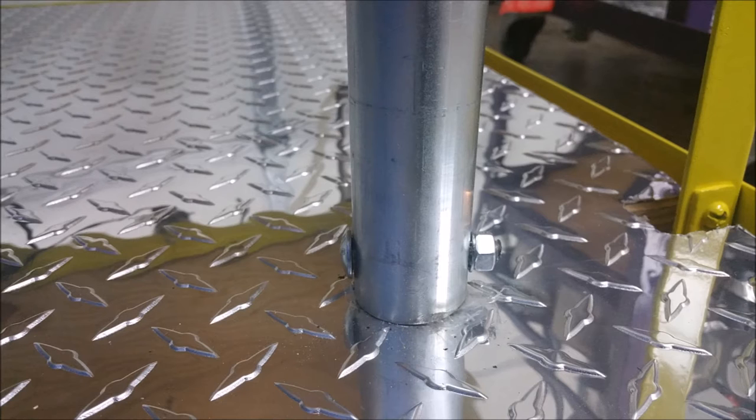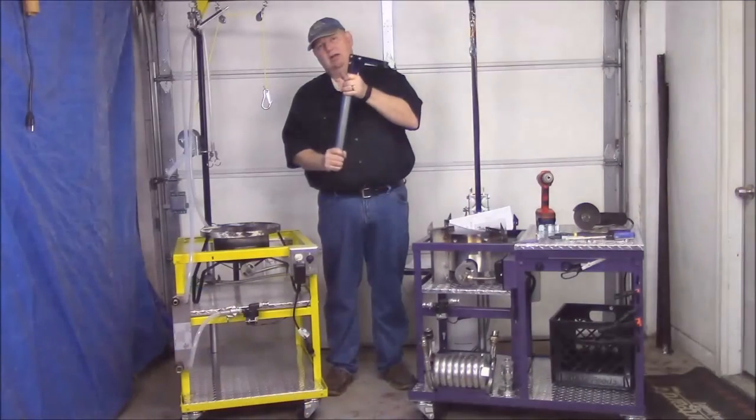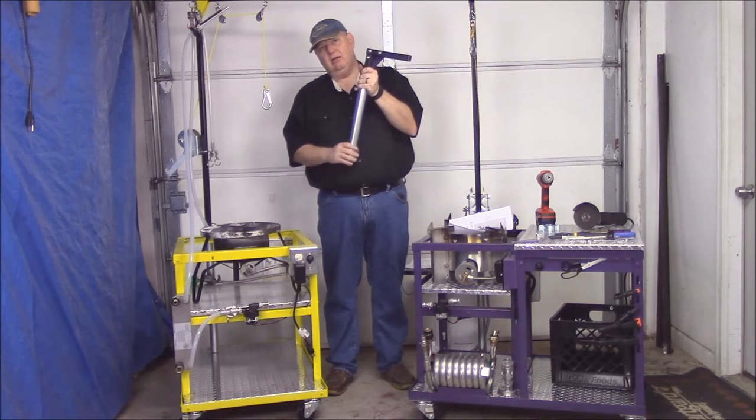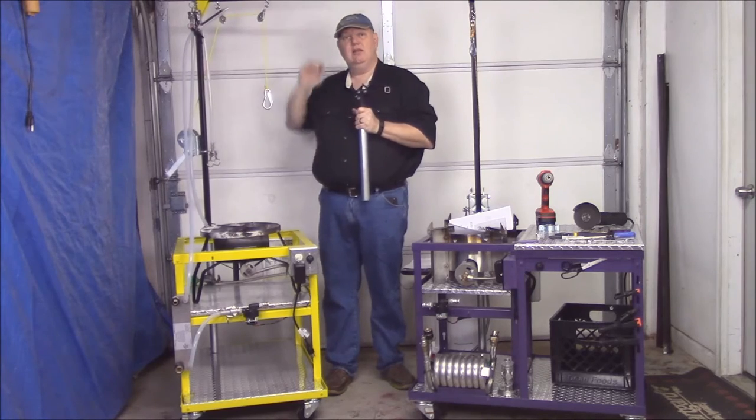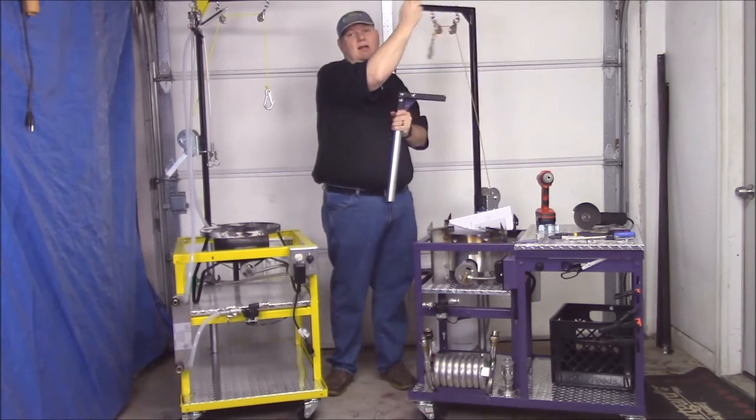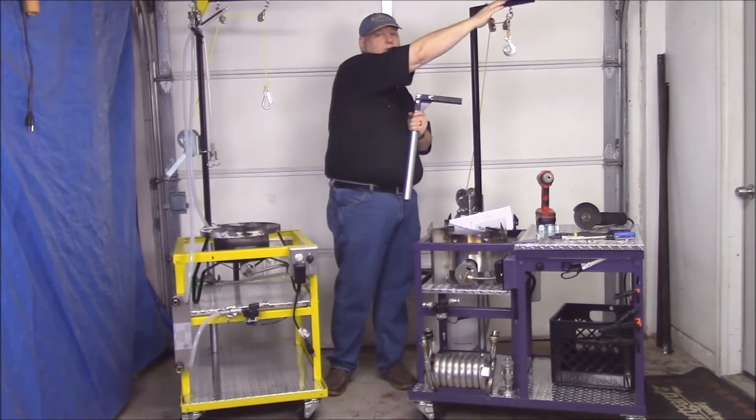Again, you could use your shank bolt or you could put a carriage bolt all the way through. And once you have that, so when you put it on here, it's going to spin. Now I have my bolt installed. I'm going to unlock it. As you can see, this one is in locked position and this one is not. This won't spin around.